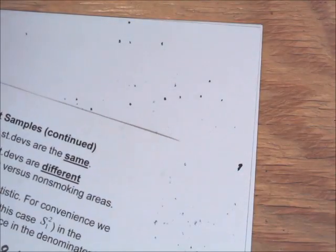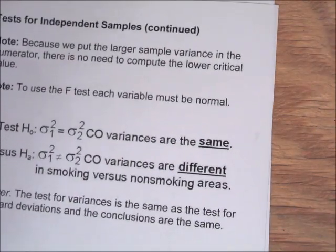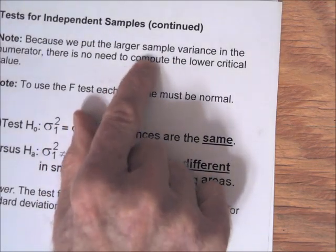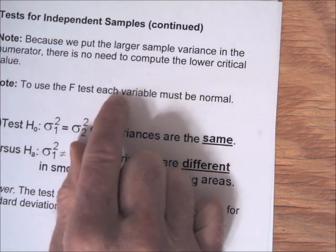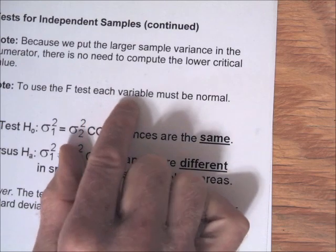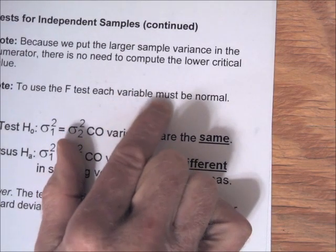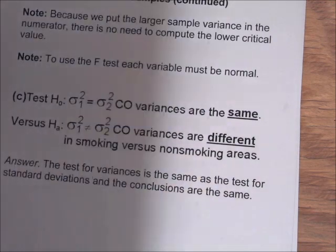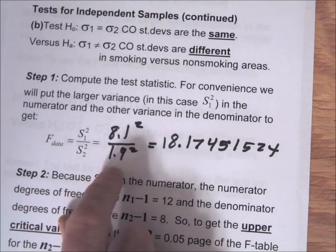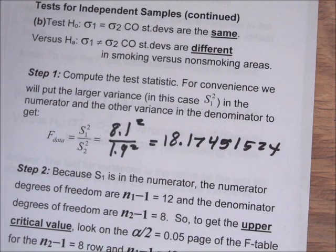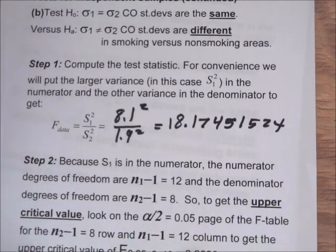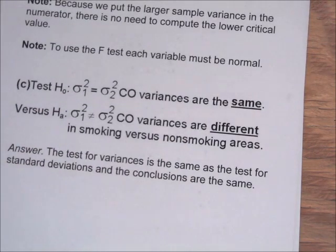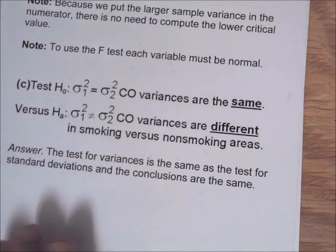Because we placed the larger sample variance in the numerator, there is no need to compute the lower critical value. To use the F test, each variable must be normally distributed. We could also test the variances rather than the standard deviations, but it is exactly the same test — the test statistic is still S1 squared over S2 squared, giving 18-point-something, and the table value is still 3.28. That concludes this presentation.